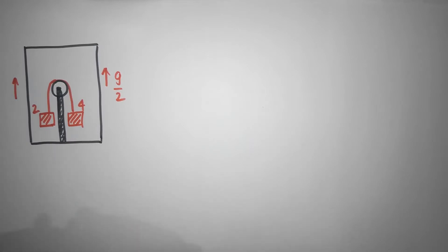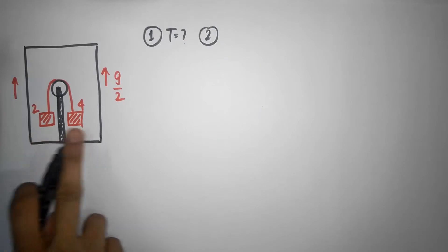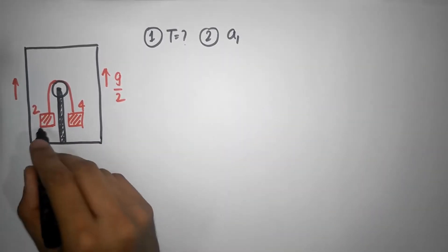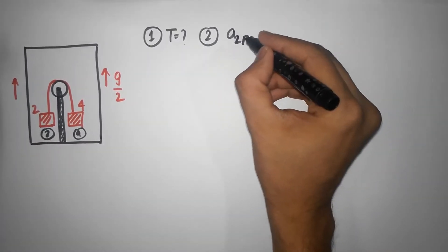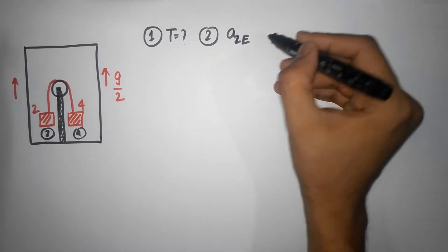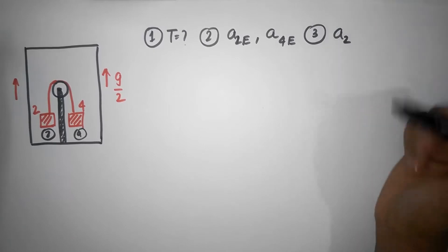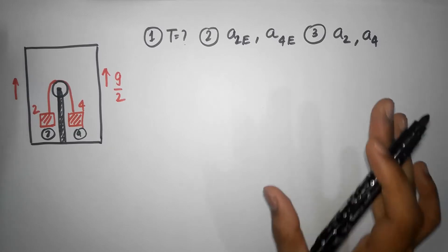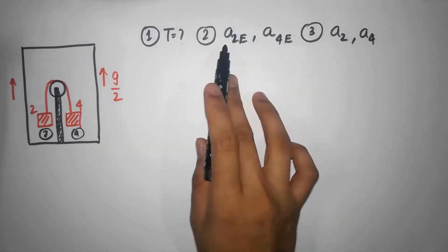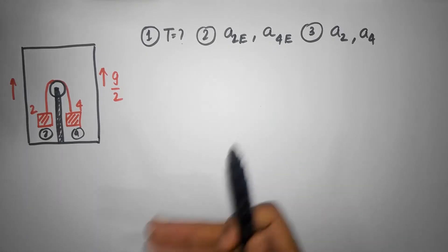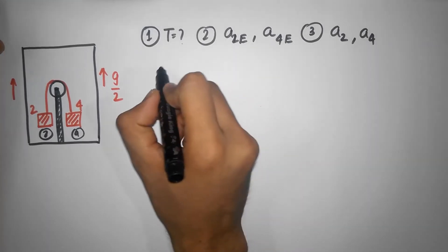The questions are: (a) what is the tension in the string, and (b) what is the acceleration of block 2 with respect to the elevator (non-inertial frame)? We also want the acceleration of block 4 with respect to the elevator, and then the true accelerations of block 2 and block 4. Since we need tension and accelerations, our first step is to go inside the elevator and treat it as at rest — working in the non-inertial reference frame.